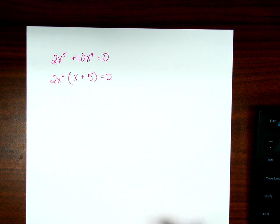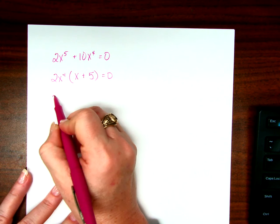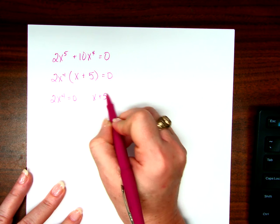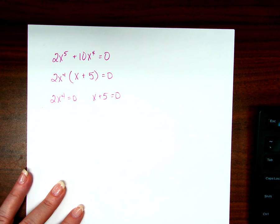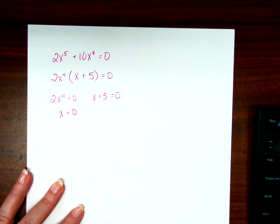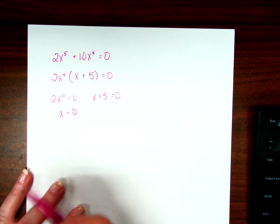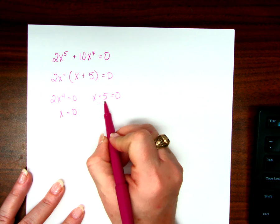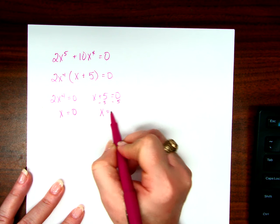Now, the zero multiplicative property says that if I multiply two things together and it equals zero, at least one of them has to be zero, right? I don't know which one, so I just think they both are. So this one's hopefully pretty obviously zero, right? If I divide by two, it's still zero. If I take the fourth root, it's still zero, right? Here, x equals negative five.